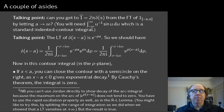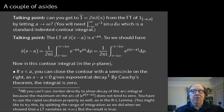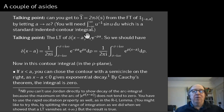A couple of comments before proving the inversion theorem. One further example: the Fourier transform of the indicator function of the interval [−a, a] is 2 sin(as)/s. Letting a→∞, the indicator widens to all of ℝ and the transform approaches 2π δ(s) again. This is another way to recover the result that the Fourier transform of 1 is 2π δ(s).